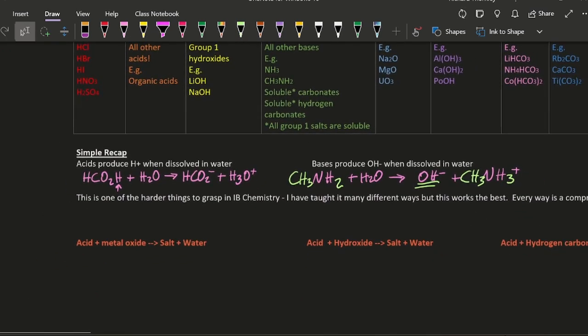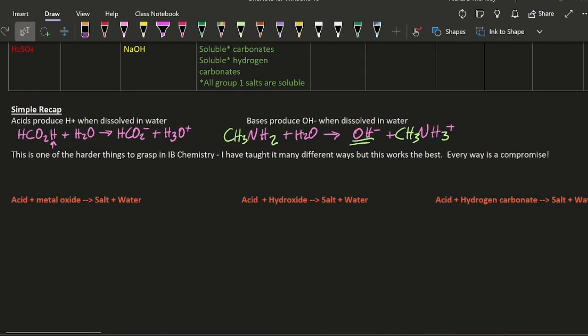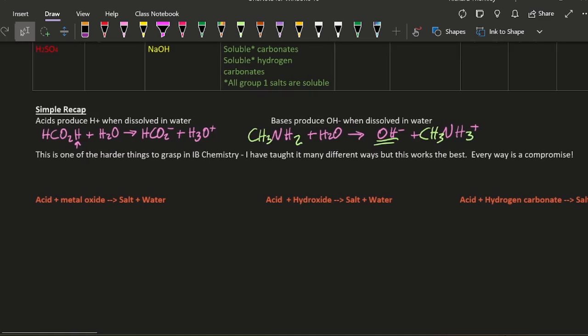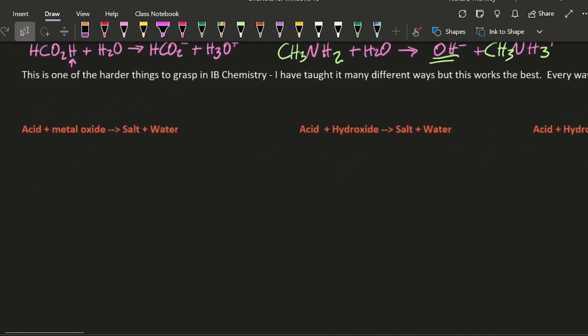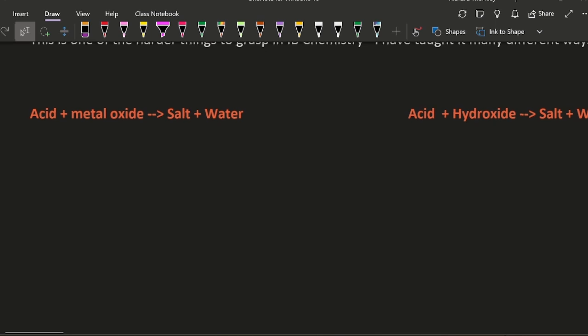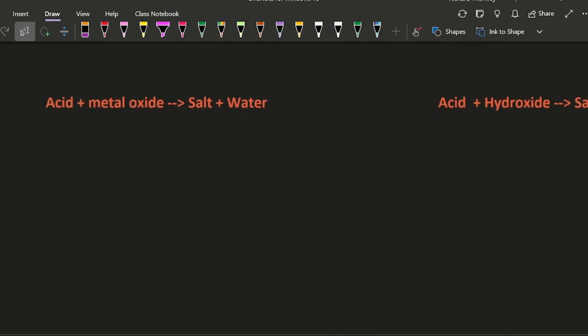All righty, like I said, this is one of the harder things to grasp. So I've done it many ways. This way works the best. If you don't like it, go to one of the other channels. Oh, it's rather aggressive, Thorny. Alright. So acid plus metal oxide. I'm just going to randomly pick an acid from the top there. Let's say nitric acid, and a metal oxide, let's say lithium oxide.